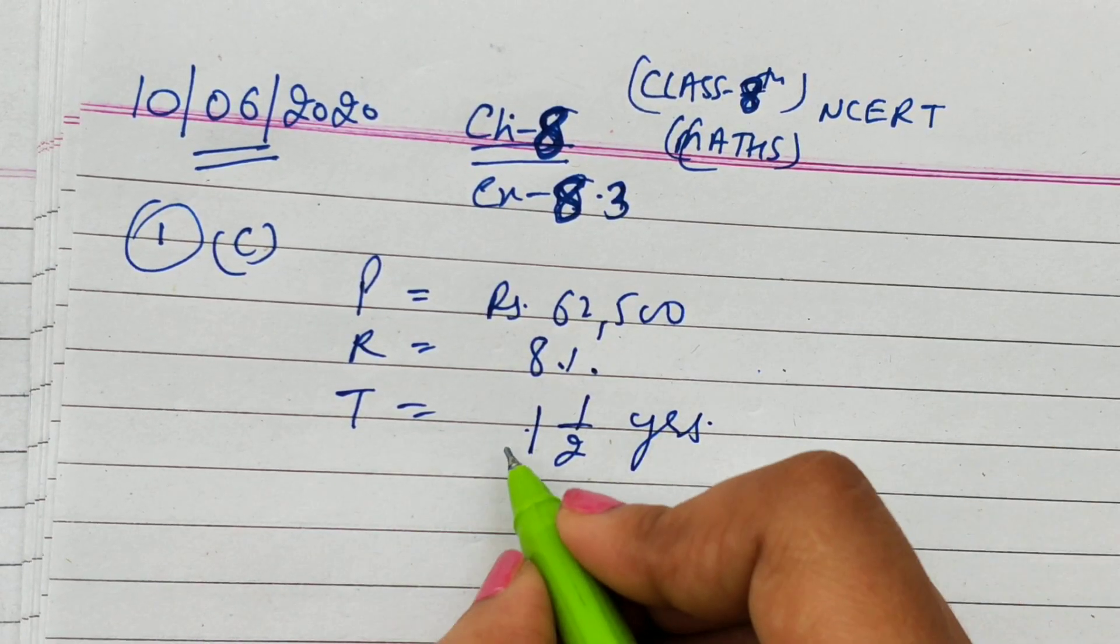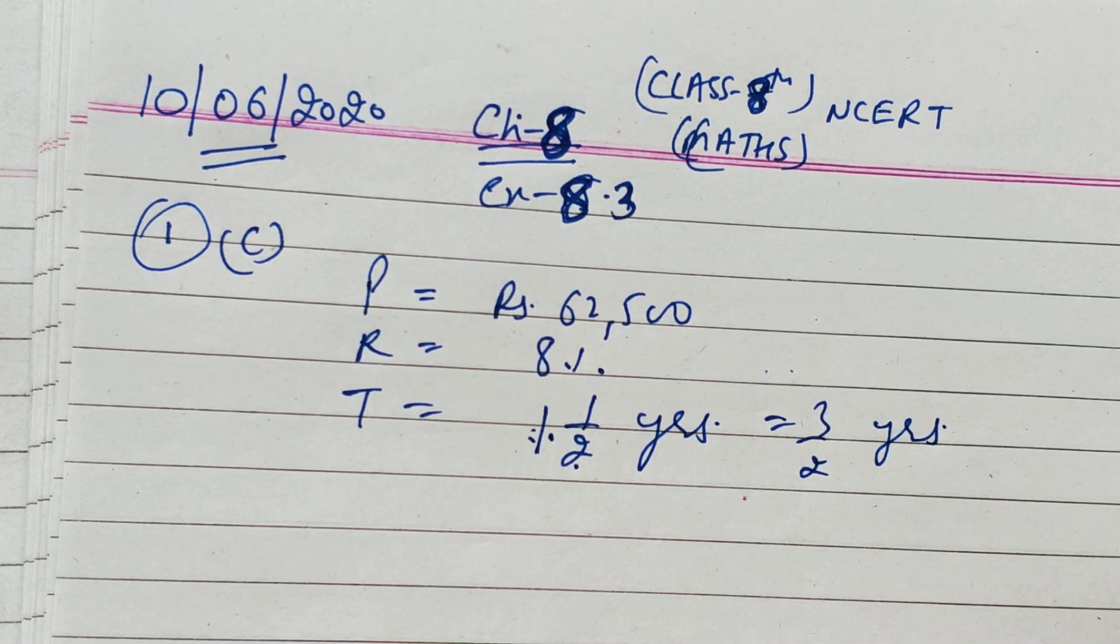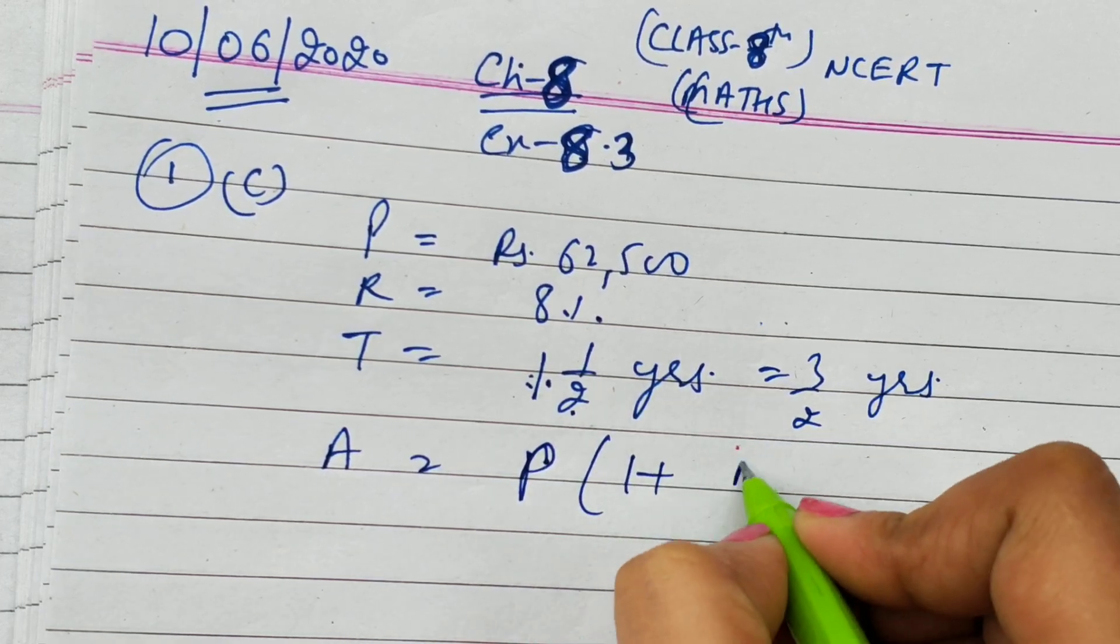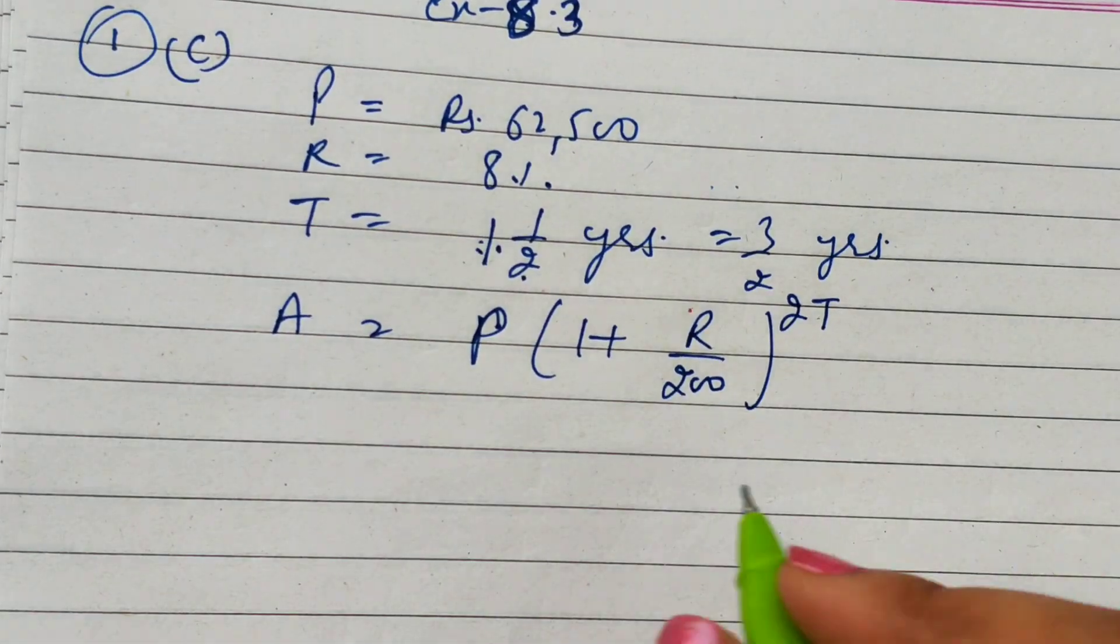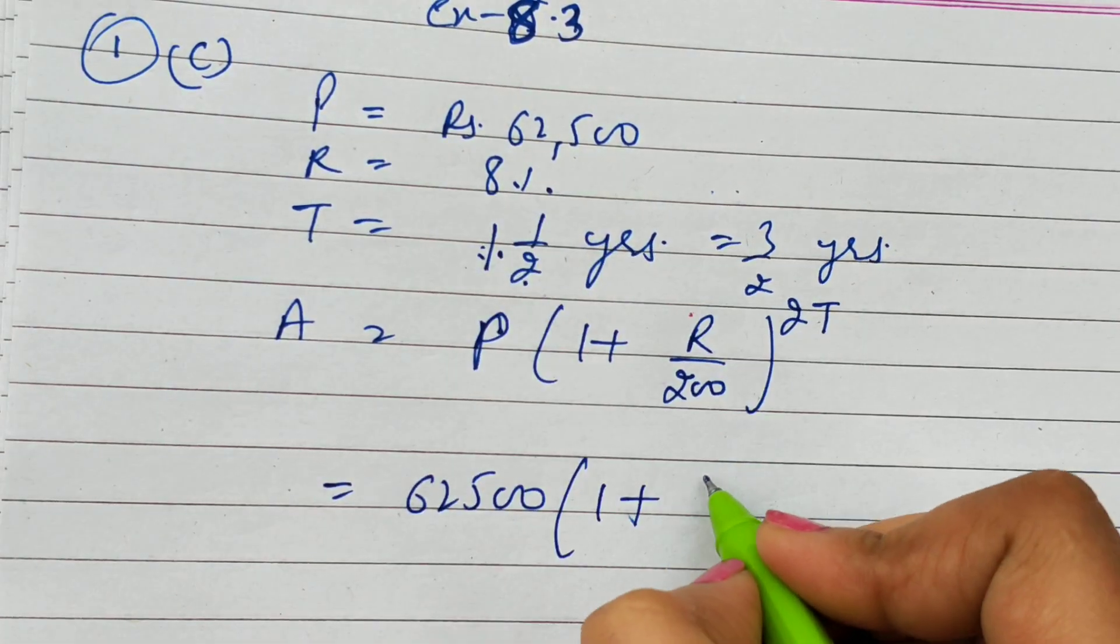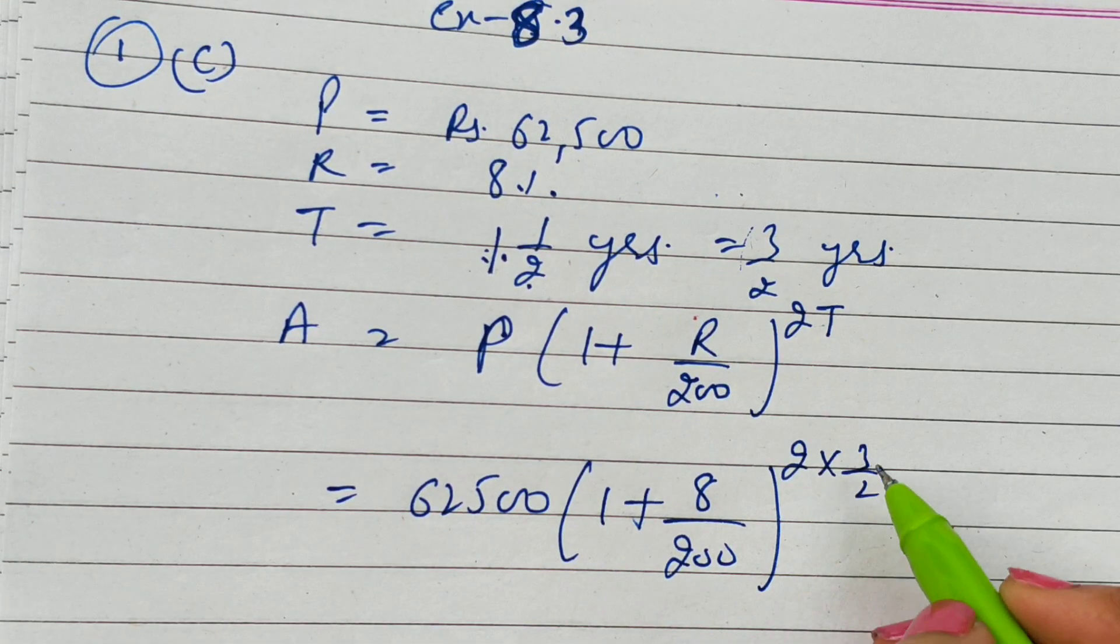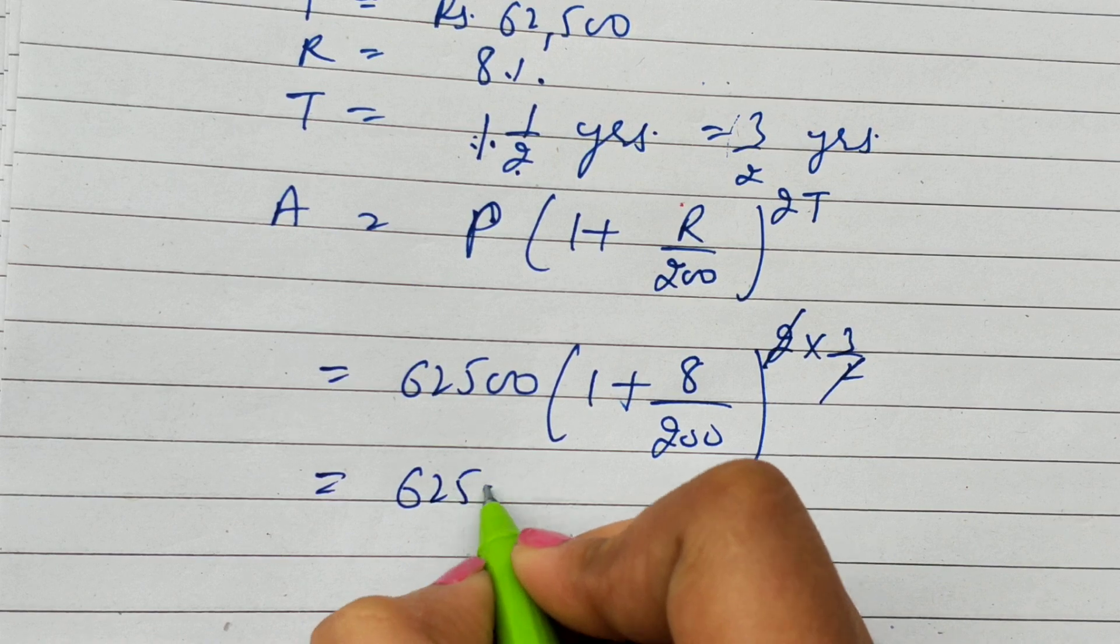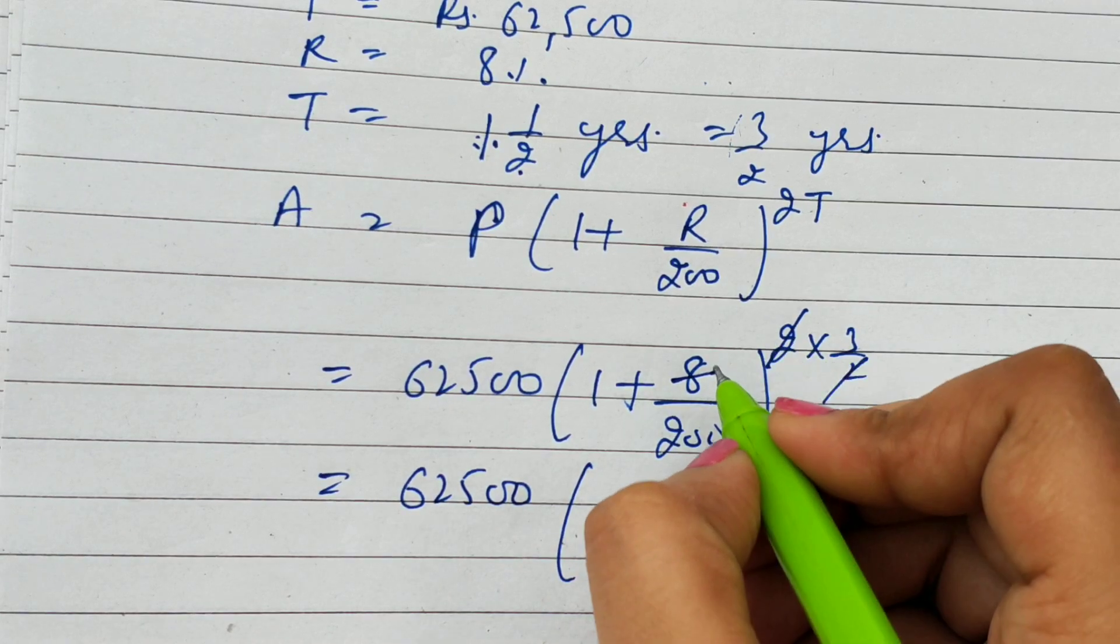We have written two formulas, one for annual and second one for semi-annual. Semi-annual means half-yearly. Let's start. Principal amount is this, rate of interest is 8%, and time is one and a half years, which is 3/2 years. When they have given semi-annual, then the formula is P(1 + R/200)^(2T).